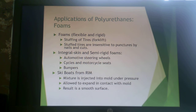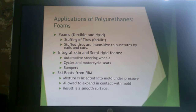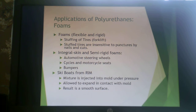There are foams present in the tires of forklifts — puncture and cut-resistant tires. If you're driving a forklift with a couple of tons on the front and you run over a nail, you don't want that tire to blow, as it will cause bodily harm and loss of inventory. Integral skin and semi-rigid foams are also used for automotive steering wheel covers, motorcycle seats, and bumpers — essentially faux leather or naugahyde — as well as ski boat panels made by reaction injection molding, where a mixture is injected into a mold under pressure and expands to give a foamed material with a smooth outer surface.